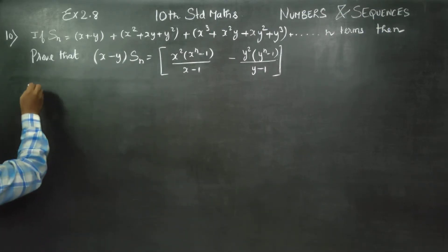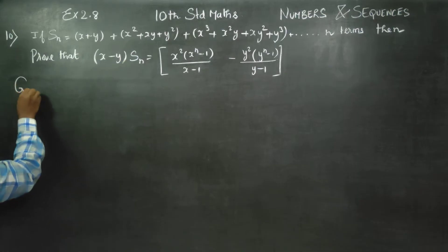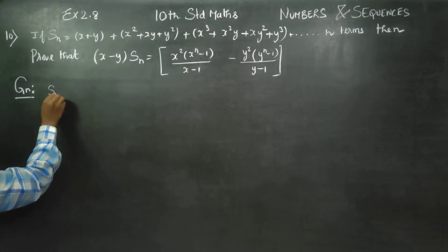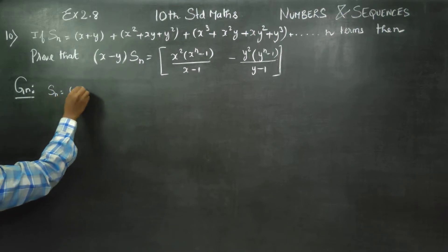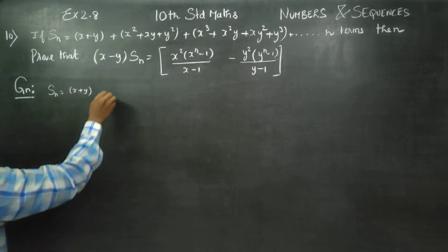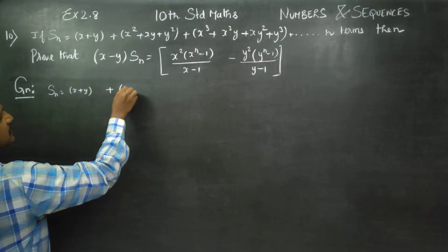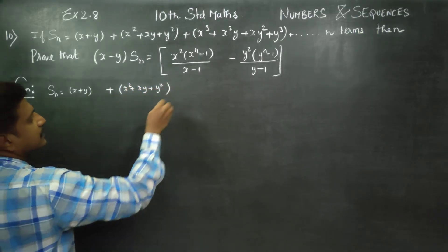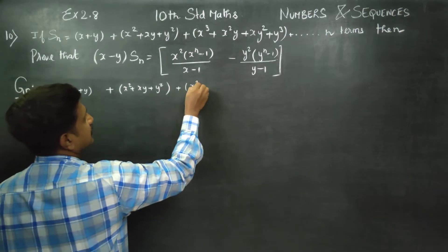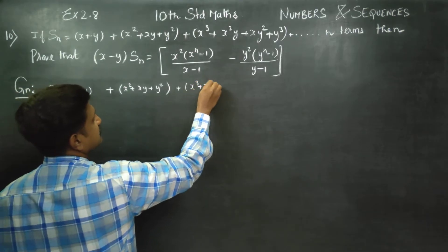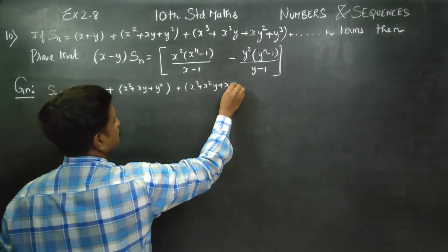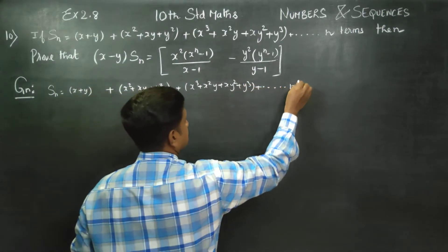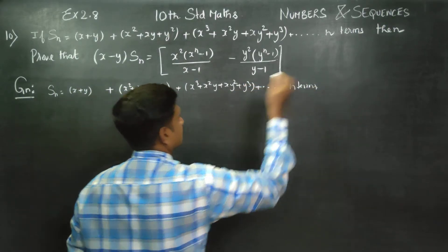I am going to start with the given. Sn is equal to: x plus y, plus x squared plus xy plus y squared, plus x cubed plus x squared y plus xy squared plus y cubed, dot dot dot n terms.